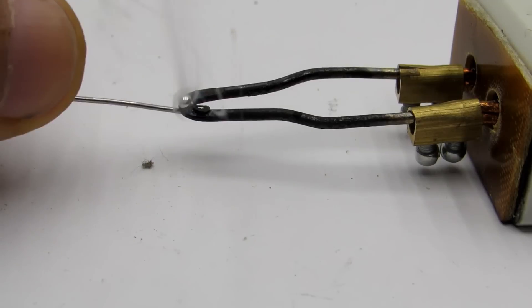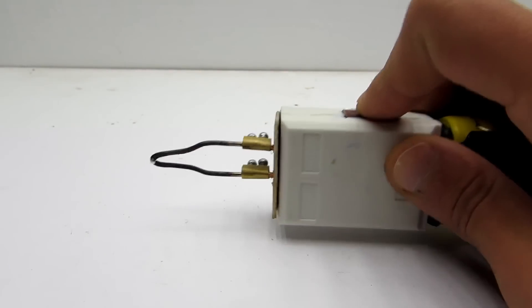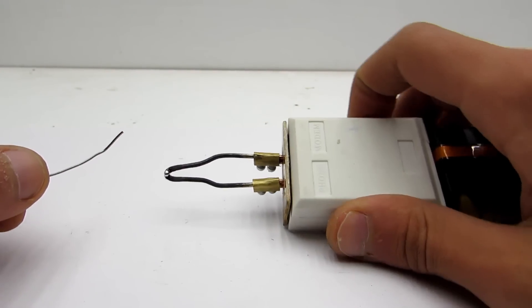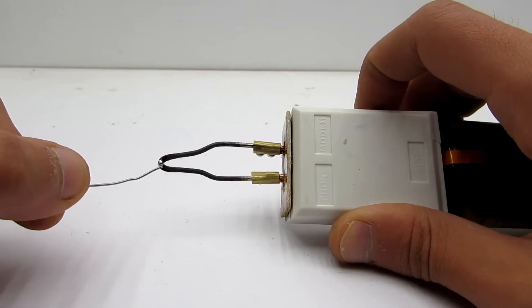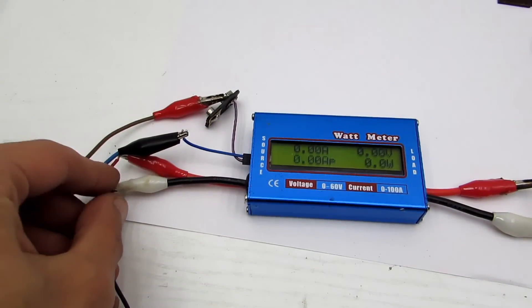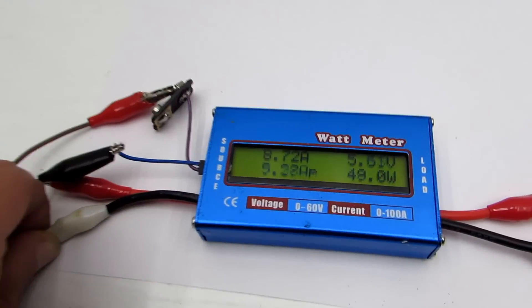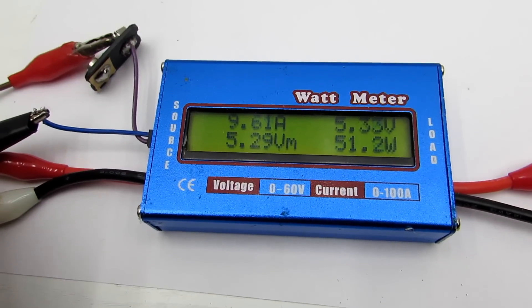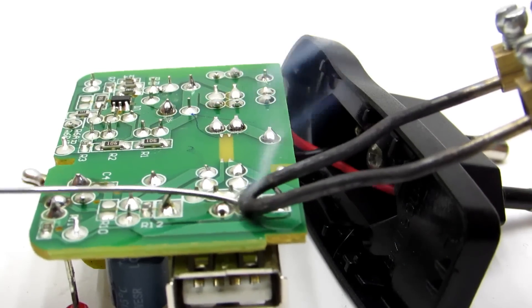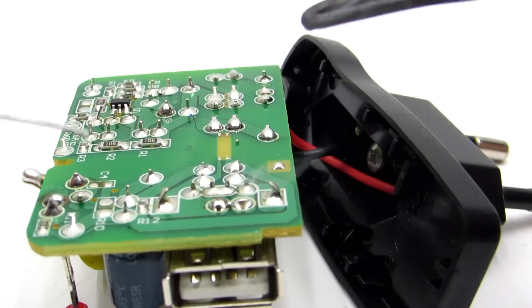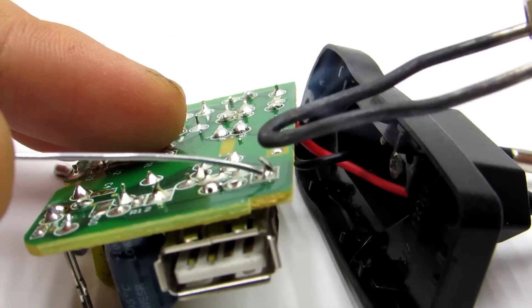This soldering iron has a few interesting features. Firstly, it heats up much faster than any other. Soldering could be done a couple of seconds after switching on. Second, power is about 14W. It's powered by two serially connected lithium batteries. It can solder fairly large areas. This is very good, but not good for batteries. There are shortcomings, but about them later.